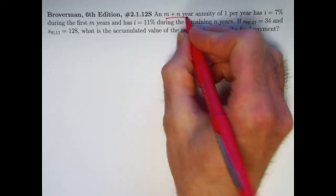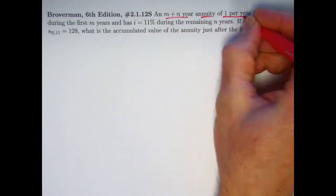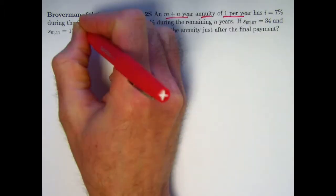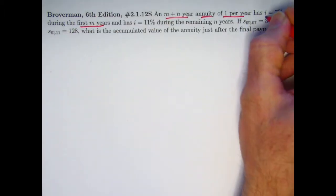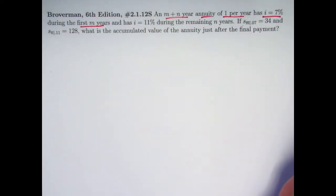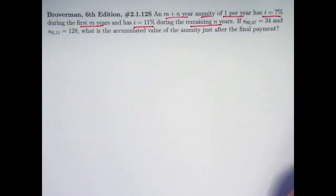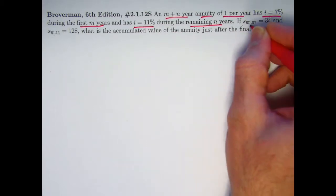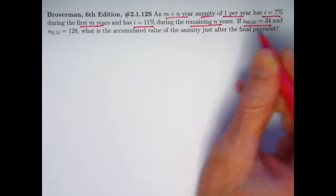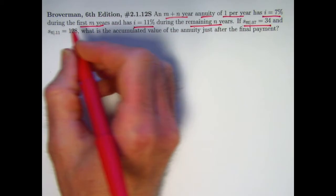So we have an M plus N year annuity of one per year. During the first M years, it's got an effective annual interest rate of 7%, and for the remaining N years, you've got an effective annual interest rate of 11%. You're given two future values based on those different time regimes and different interest rates.